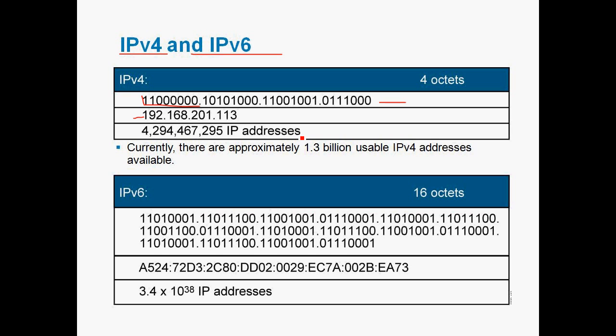Let's see IPv6. IPv6 is a 128-bit address. It contains 16 octets. Each octet contains 8 bits. So how many IP addresses we will get in IPv6? That is 3.4 into 10 to the power 38 IP addresses. So that many IP addresses we will get from IPv6 — we cannot even predict that.